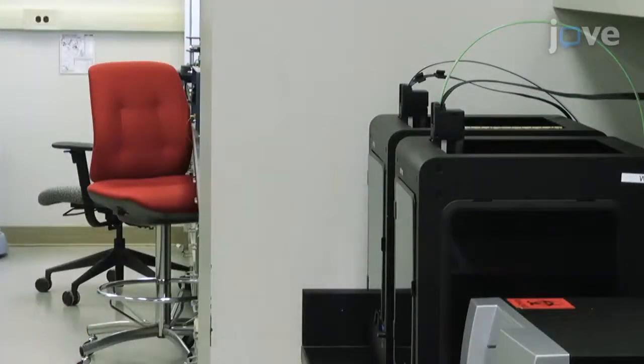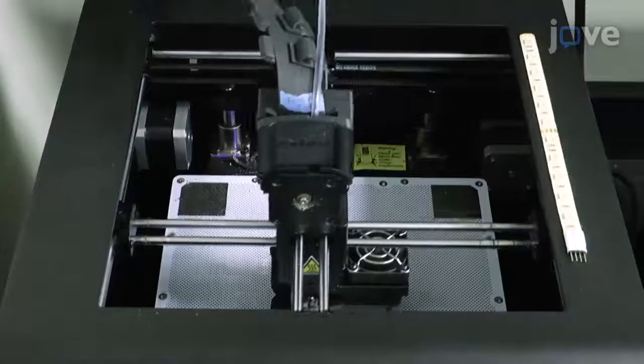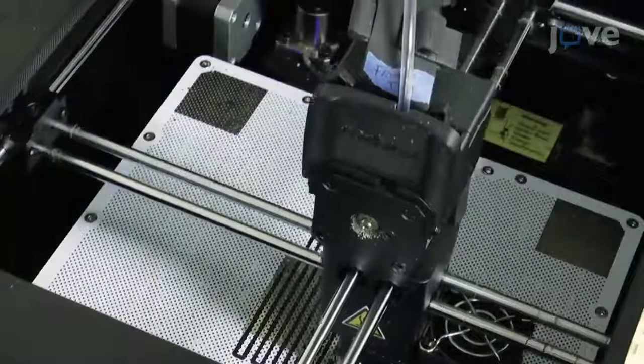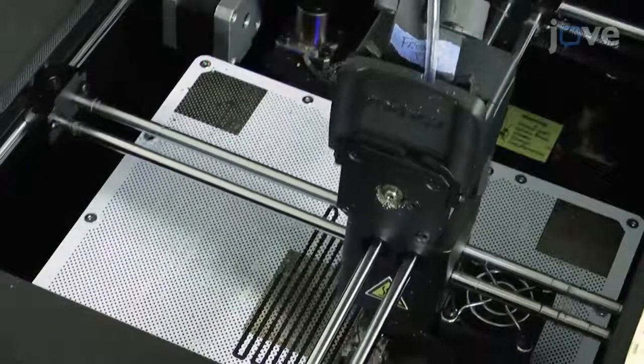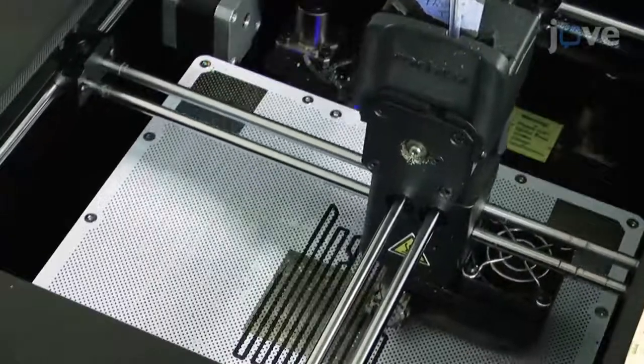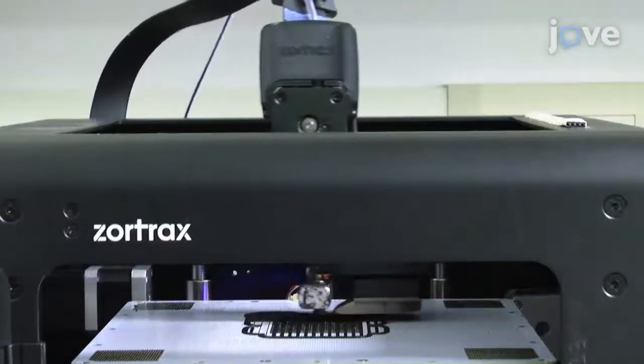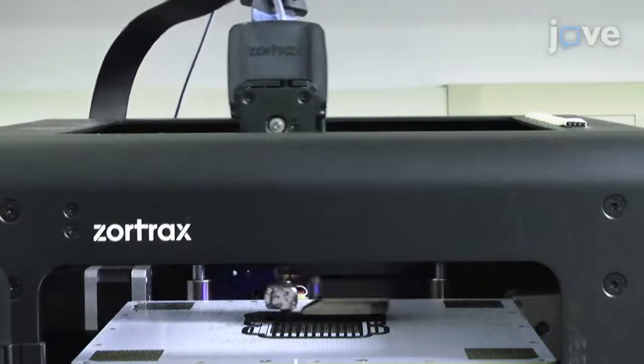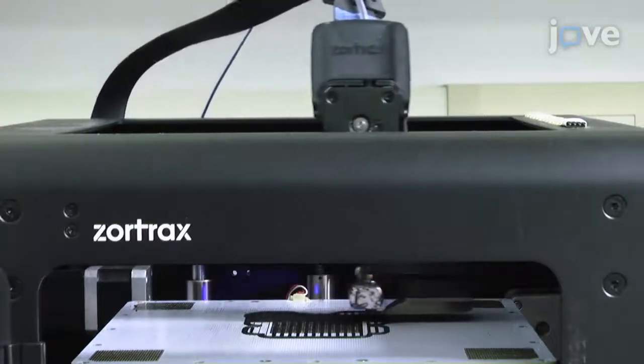Now, print the plastic components using acrylonitrile butadiene styrene with a high-quality 3D printer setting. If other common 3D printing materials are being used, such as polylactic acid or other thermoplastic elastomers, make sure that the finished mechanical properties are comparable.